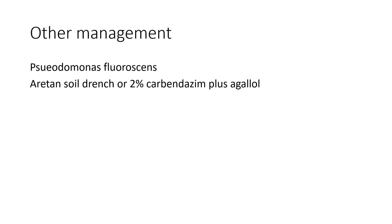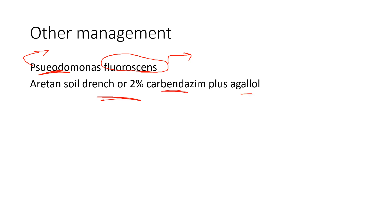Research has found that a particular species called Pseudomonas fluorescens acts as an inhibiting agent against Fusarium — this is a biological control method. Additionally, some research papers suggest that applying 2% carbendazim plus agalol or aritene as a soil drench can help control the disease to a certain extent. These are recent innovations in the control of Panama disease.